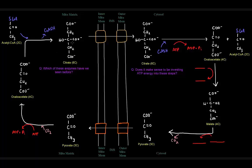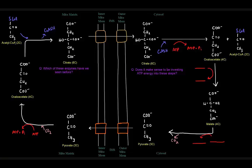On the left side here is the mitochondrial matrix. This first membrane here is the inner mitochondrial membrane. The space between these two membranes is the intermembrane space. This outer membrane here is the outer mitochondrial membrane. Over to the right here is the cytosol. Let's start up here at the top left with acetyl-CoA — we want to get this two-carbon acetyl-CoA unit out into the cytosol.